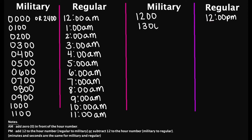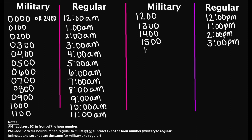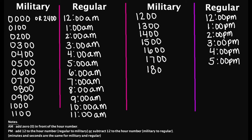1300 hours is 1 p.m. 1400 hours is 2 p.m. 1500 hours is 3 p.m. 1600 hours is 4 p.m. 1700 hours is 5 p.m. 1800 hours is 6 p.m. Then we have 1900 hours — this is 7 p.m.